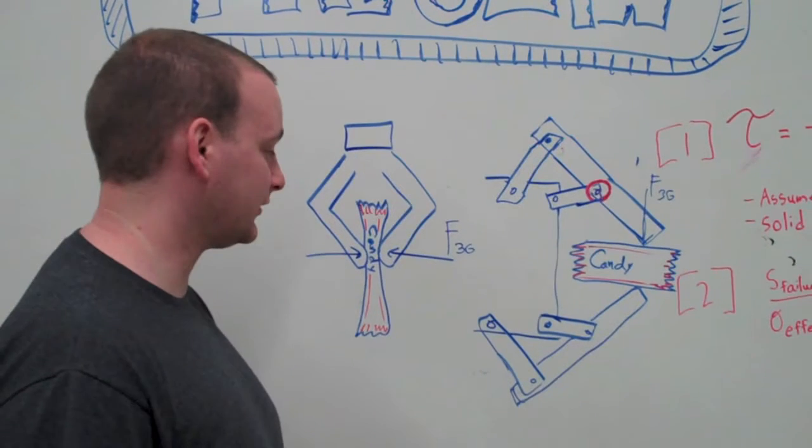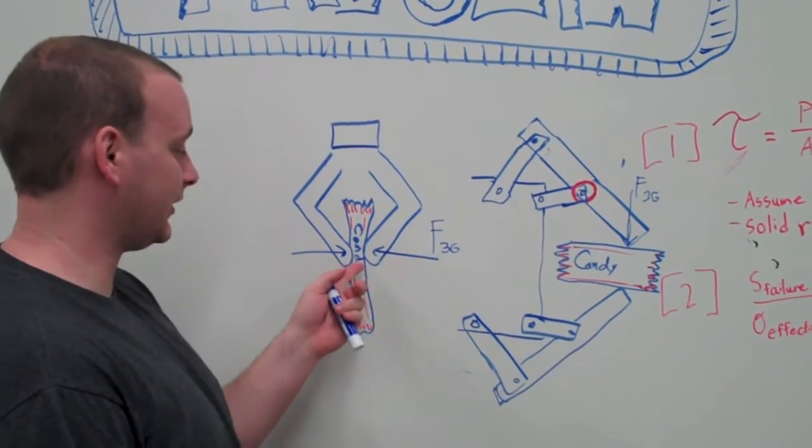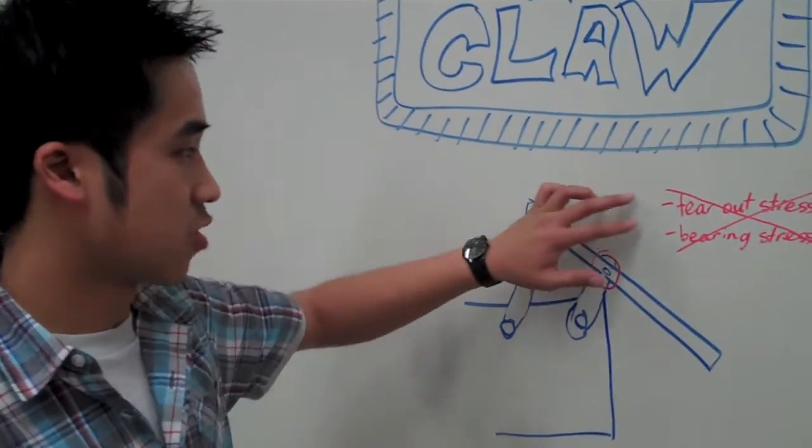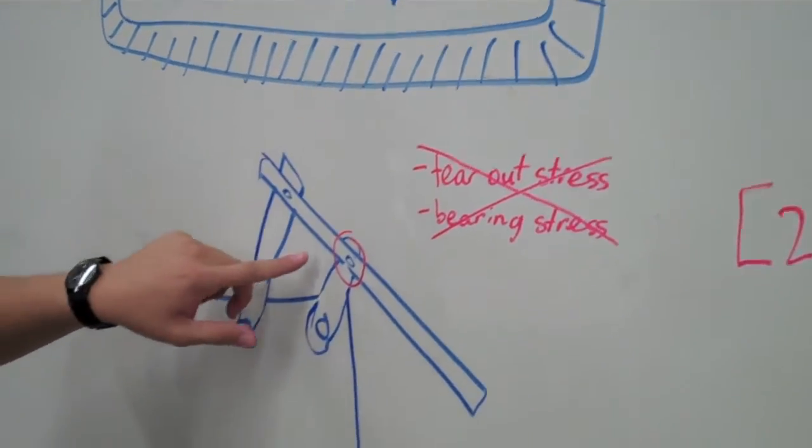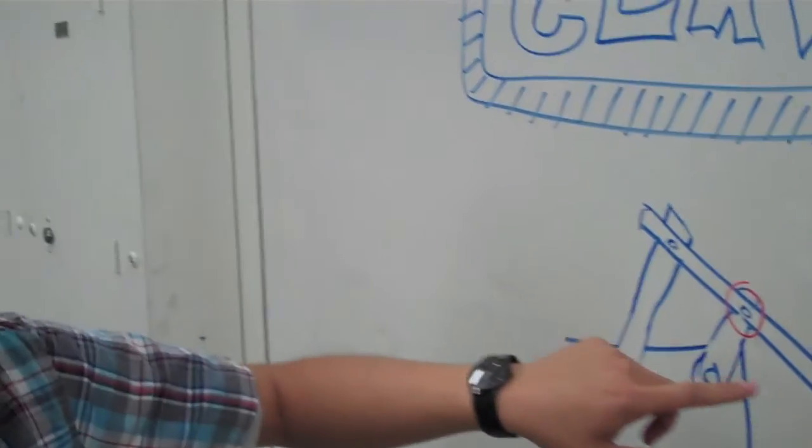As previously discussed, we found F3G from the matrices, and this force is being applied on the candy bar. So for our stress analysis, we determined that the tail stress and the bearing stress is negligible. We determined that the stress that's most important is at the rivet, as shown here.